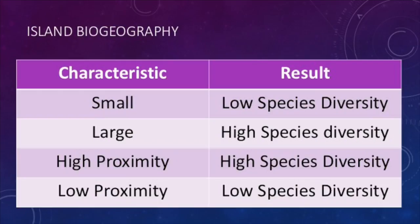If an island is very small, then we would expect to see fewer species types because there are few niches to fill. If an island is larger, then we would expect to see more species types, as there are more niches to fill. In terms of proximity, if an island is close to other islands or the mainland, we would expect higher species diversity because there is little hindering the immigration of species. If it is further, then we expect fewer species types. Overall, the proximity of an island determines immigration rates, and both island size and available abiotic factors determine the success rate as well as the death rate of these immigrants.